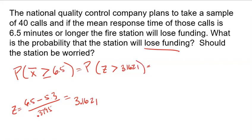Now, to find that probability, I am going to have to go to my calculator, and I am going to have to use normal CDF. I'm going to have to look from 3.1621 to infinity with a mean of 0 and standard deviation of 1. That's for a generic normal model. And if you use your calculator, you get a probability of 0.00078.